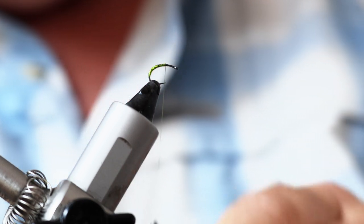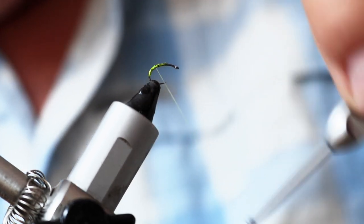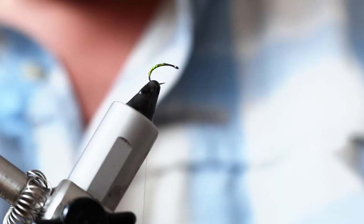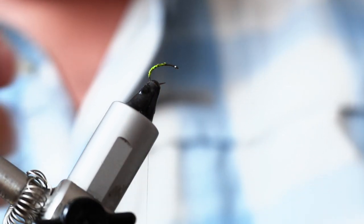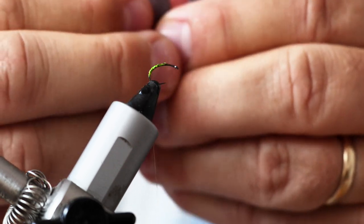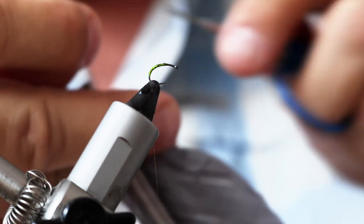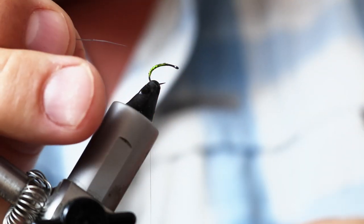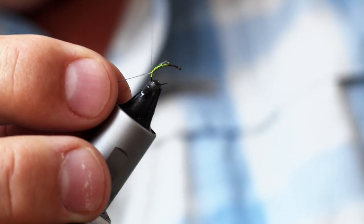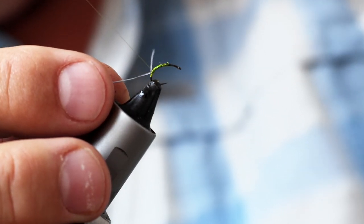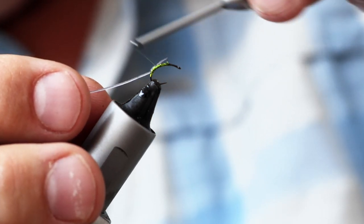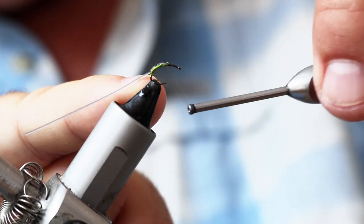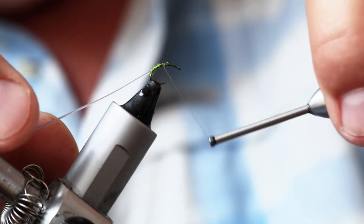Now I'm just going to wind my tying thread back down to around the corner. Let it hang down and grab, this time, just a single biot from that turkey feather. Again, just a little variation. Catch it in once more. And you'll probably notice that I've just left a little bit of a gap at the back there. So you can just see that tinsel appearing from underneath the biot.